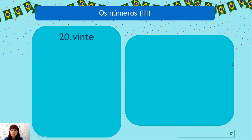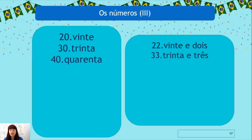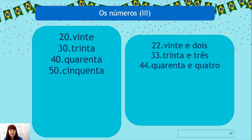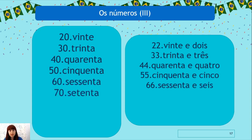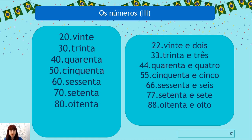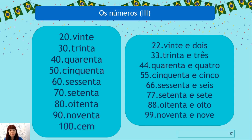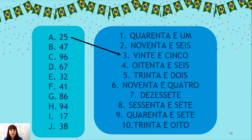From vinte onwards, we write three words — for example, vinte e dois — but in speech it sounds like one word. The pattern continues: trinta, trinta e três; quarenta, quarenta e quatro; cinquenta, cinquenta e cinco; sessenta, sessenta e seis; setenta, setenta e sete; oitenta, oitenta e oito; noventa, noventa e nove; cem. The numbers are very logical — just learn and practice them.